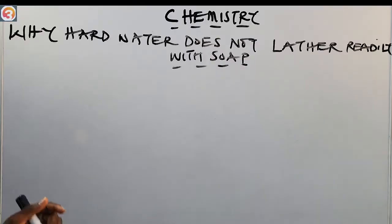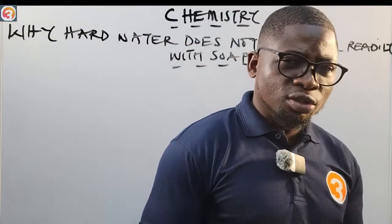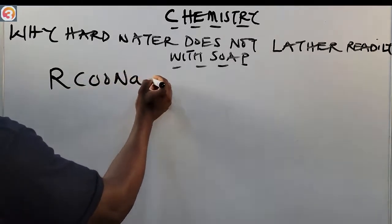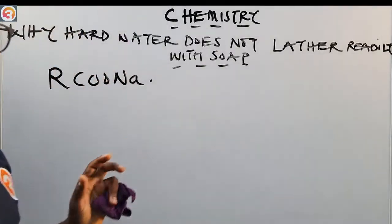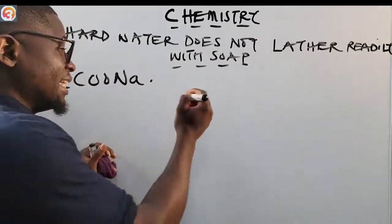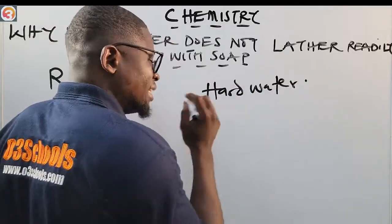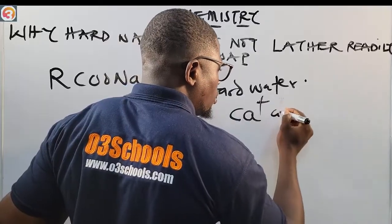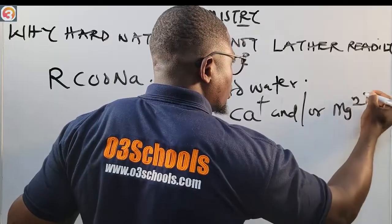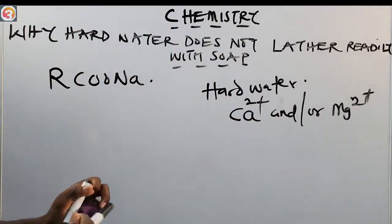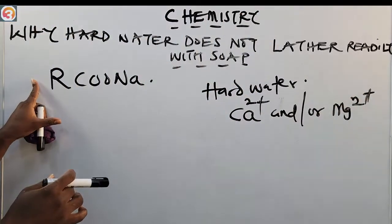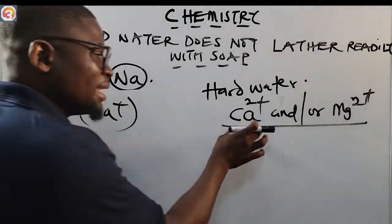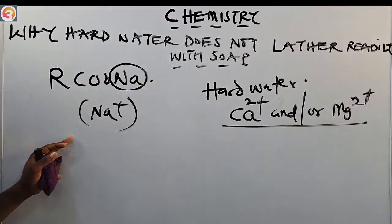The reason why hard water does not lather readily with soap is simple. Most soaps have the general formula RCOONa. Hard water contains dissolved minerals — calcium ions (Ca²⁺) and magnesium ions (Mg²⁺). The sodium ions present in the soap displace the calcium or magnesium ions from the solution.